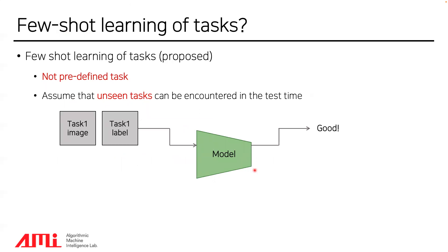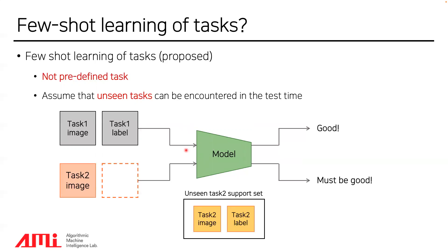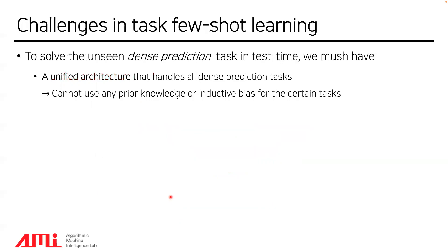For example, at training time, the model is trained to conduct an arbitrary task. At test time, unseen tasks are presented to the model with an unseen task support set. The authors want a model generalizable to unseen tasks with unseen types of labels. This is a novel and challenging task. To solve unseen dense prediction tasks at test time, we must have a unified architecture that handles all dense prediction tasks. Because of the unified architecture, we cannot use any prior knowledge or inductive bias for certain tasks.